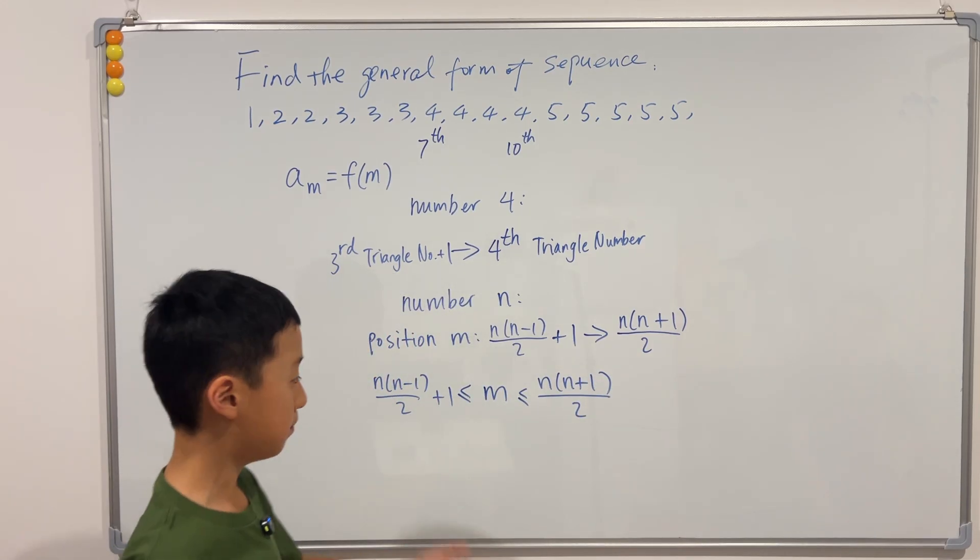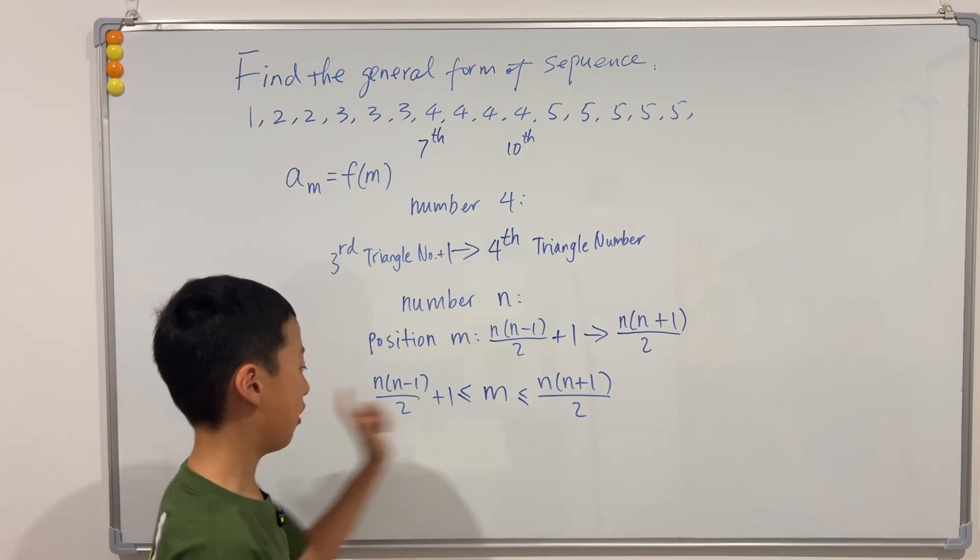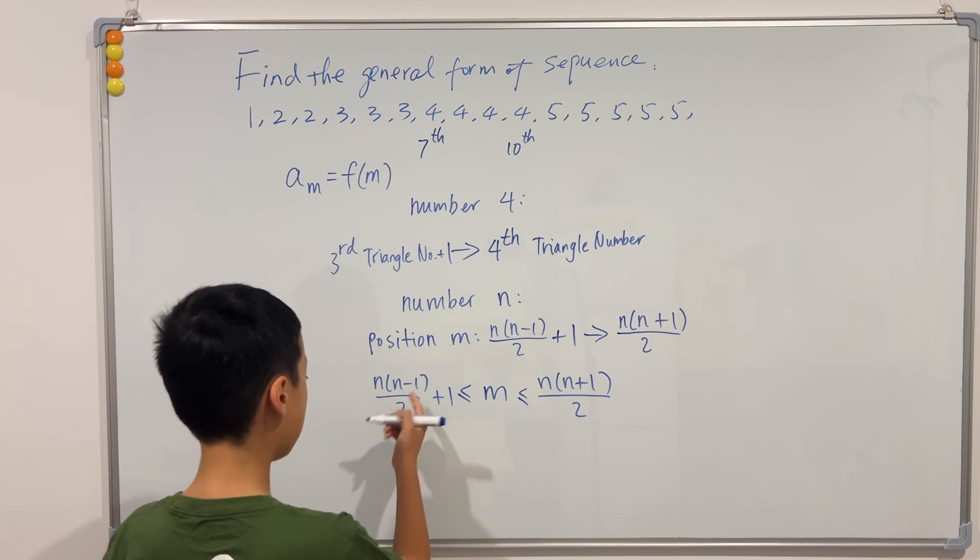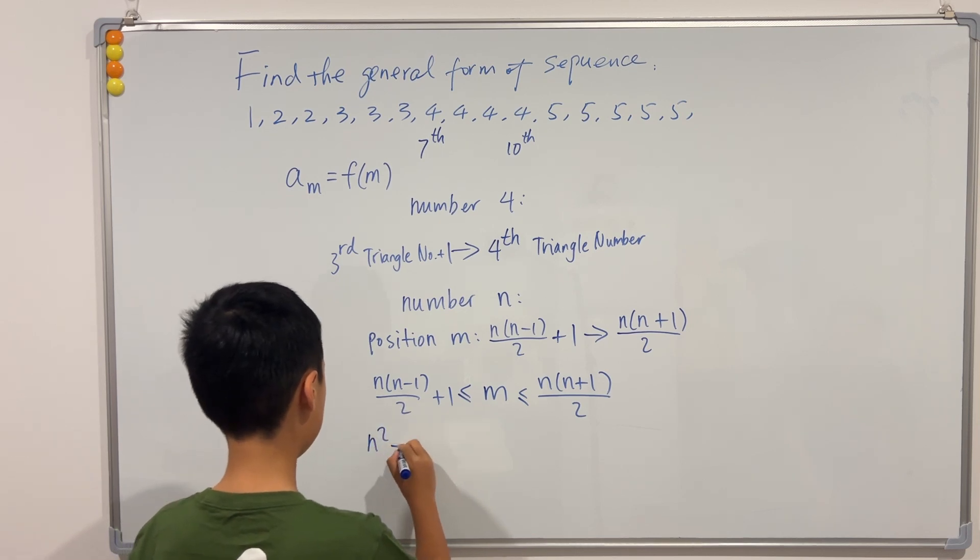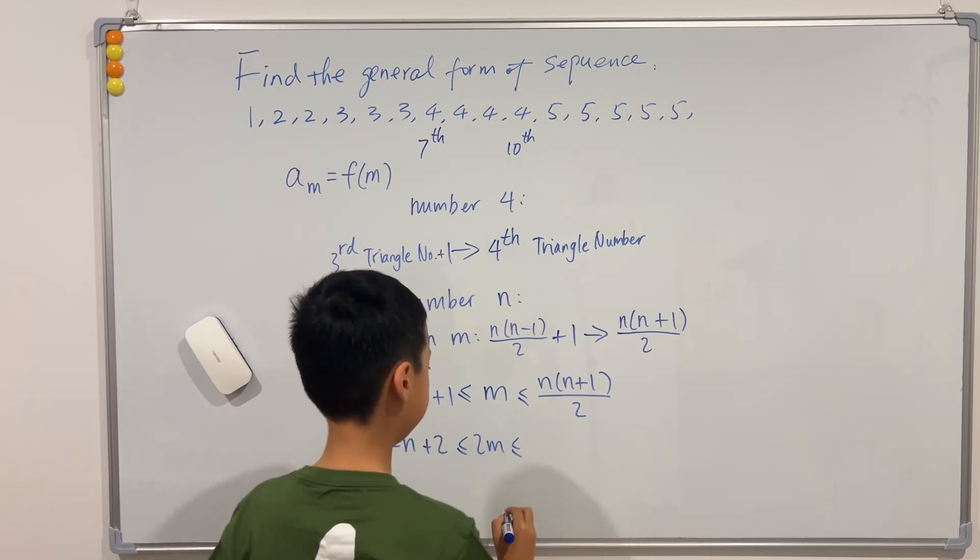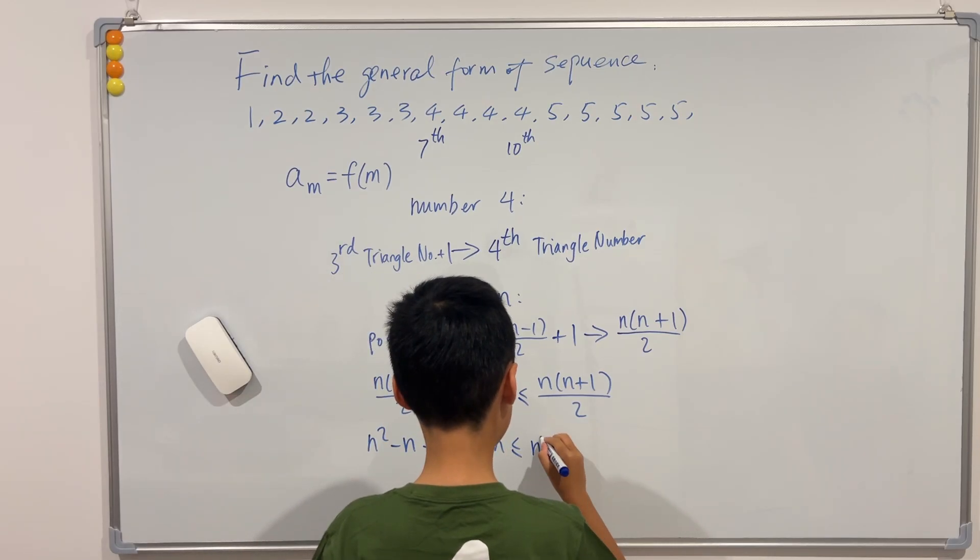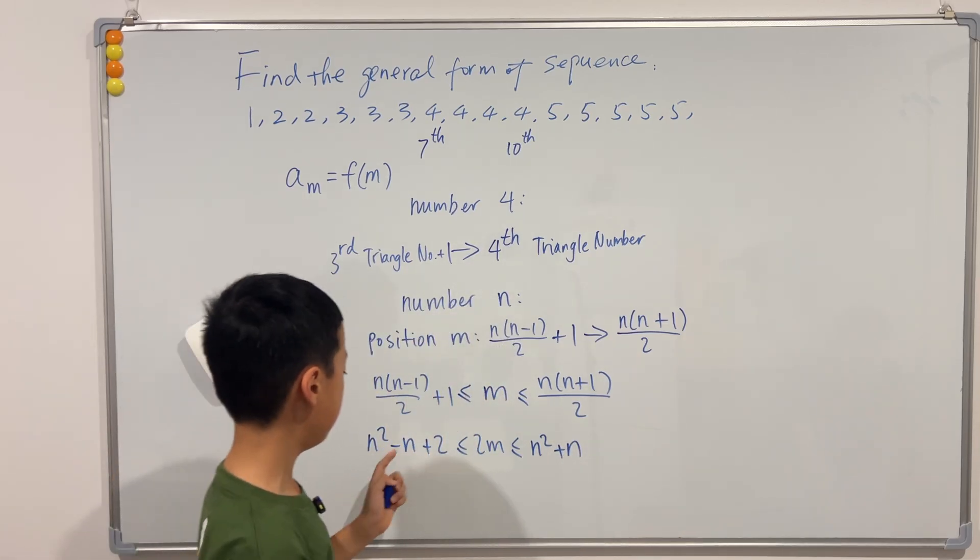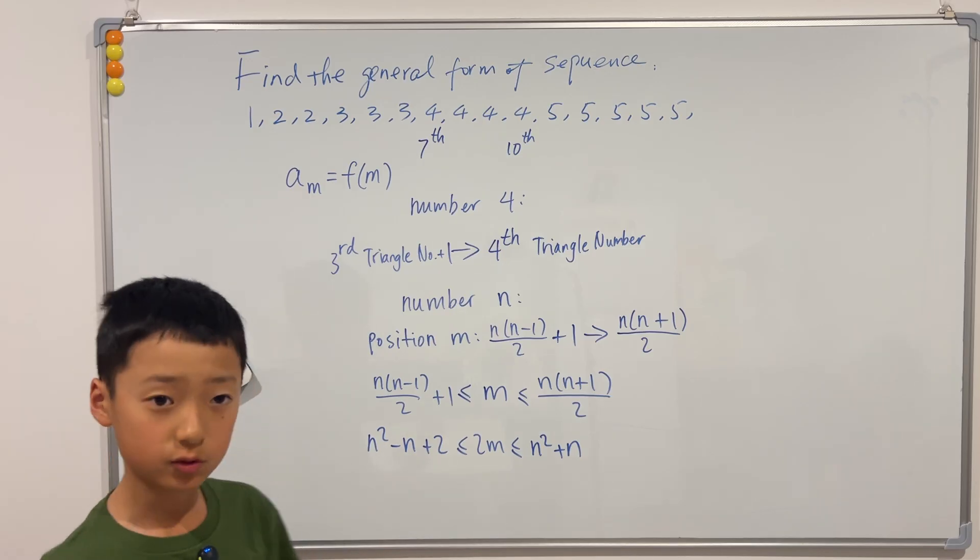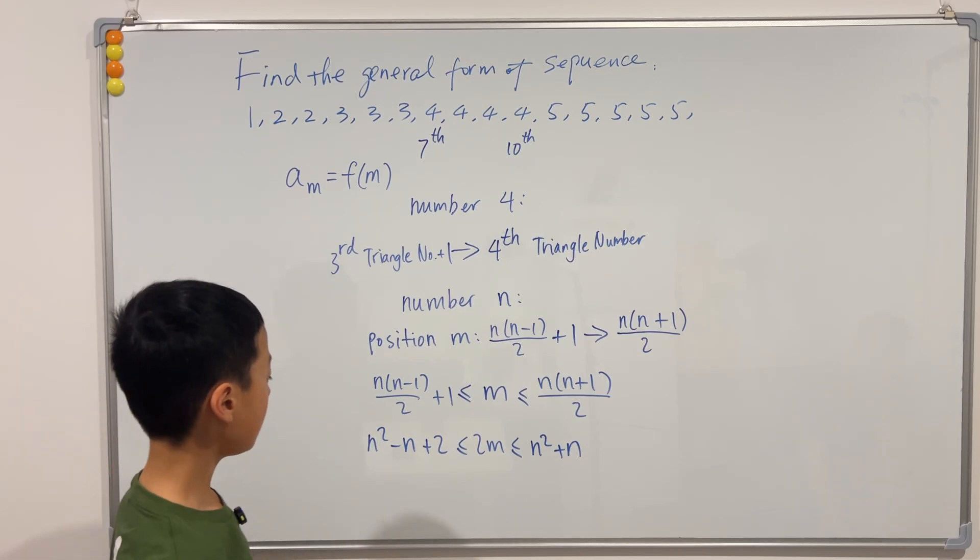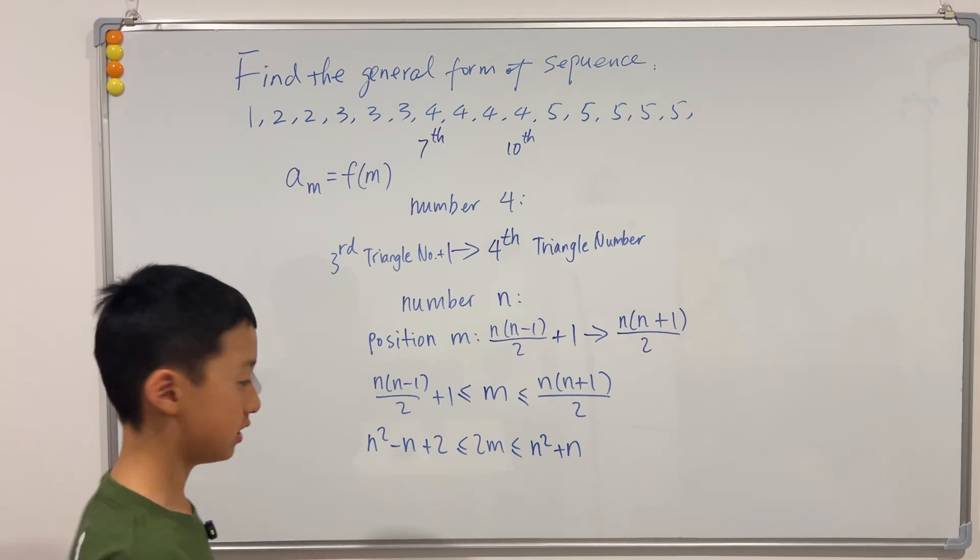Now if we multiply all the sides by two and we unpack, we want to get rid of the squares. So how do we do that? Well, we can complete the squares. So note that this is greater than...